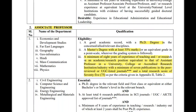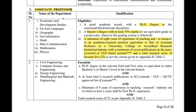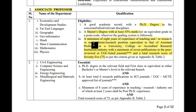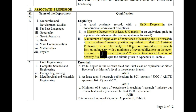Now let's see the qualifications for Associate Professor. For all subjects, the eligibility is: a good academic record with a PhD degree. Second, a Master's degree with at least 55% marks. Third, a minimum of 8 years of experience in teaching and/or research in academic or research positions equivalent to that of Assistant Professor in university or college, or aggregate research in industry, with a minimum of 7 publications in peer-reviewed or UGC-listed journals and a total research score of 75.